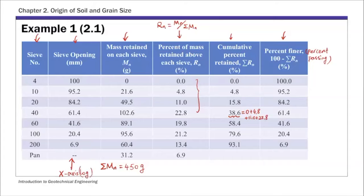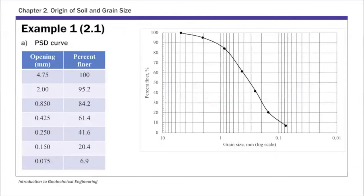The x-axis is particle size — essentially the sieve opening — on a log scale, and the y-axis is percent finer on a linear scale. I took those two columns from the table and plotted them in Excel to generate the particle size distribution curve, showing grain size in millimeters on the log x-axis and percent finer on the y-axis.